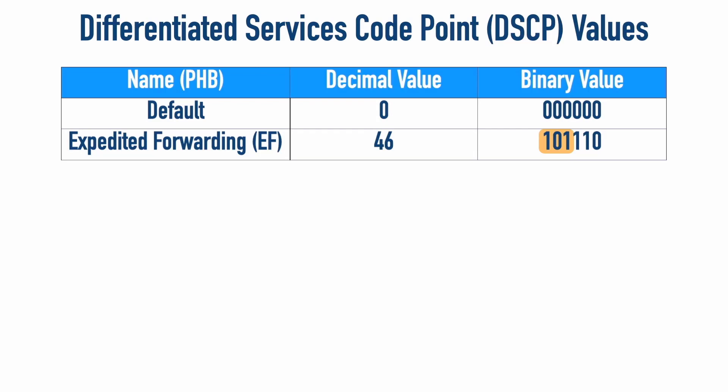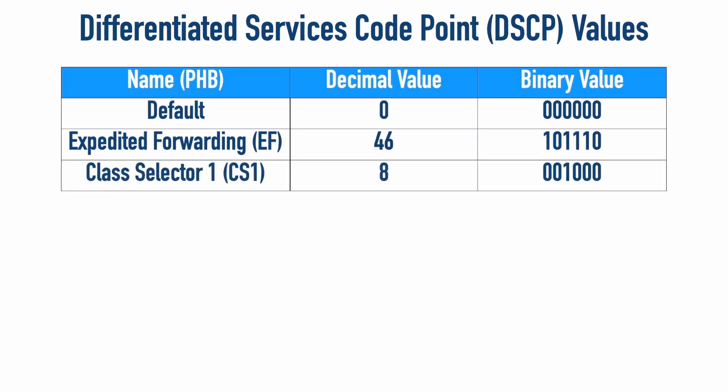However, if we want pure backwards compatibility, we can use a class selector value. There are seven of these — class selector one through class selector seven. Pure backwards compatibility means that an IP precedence marking only uses the three leftmost bits in the TOS byte, with all other bits as zero. So if a DSCP value only uses the three leftmost bits and leaves the other bits as zeros, it looks identical to an IP precedence marking. For example, class selector one has a decimal value of eight — because we have a one in the eight column of those six leftmost bits — but from an IP precedence perspective looking at only the three leftmost bits, 001 in decimal is a one. So class selector one is interpreted as having an IP precedence of one.